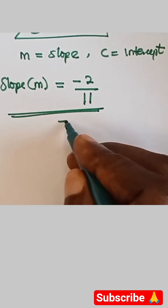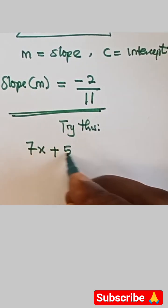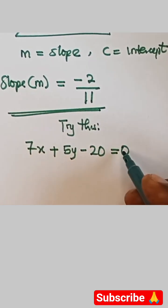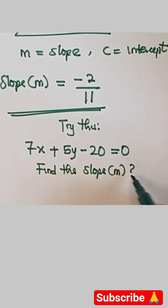So let's do something similar to that, let's try this. We have 7x plus 5y minus 20 equals 0. Let's find the slope of this line.